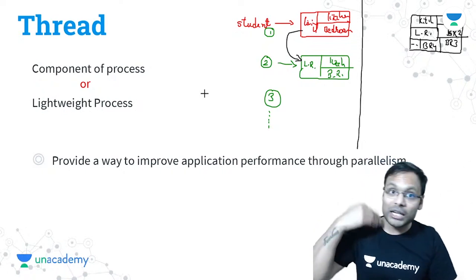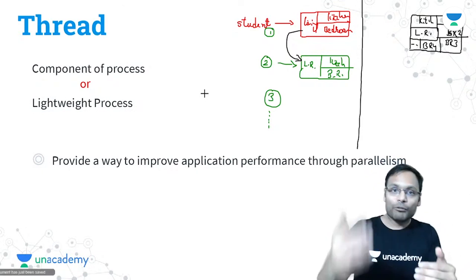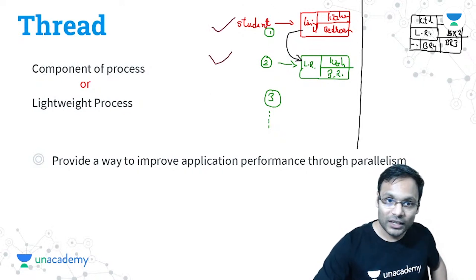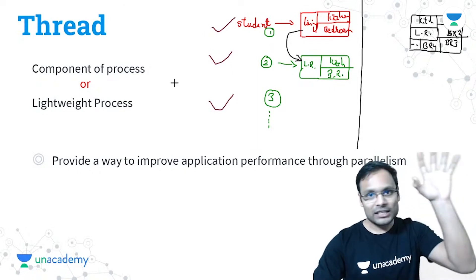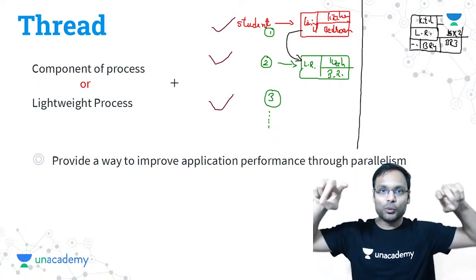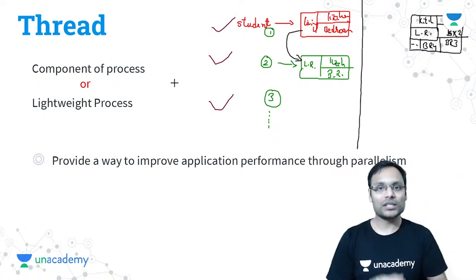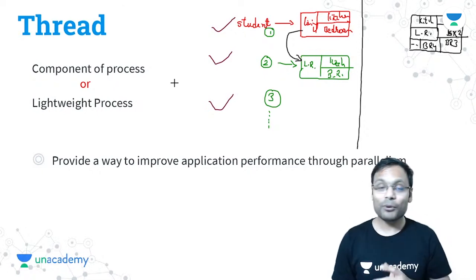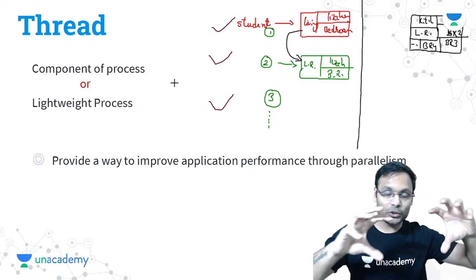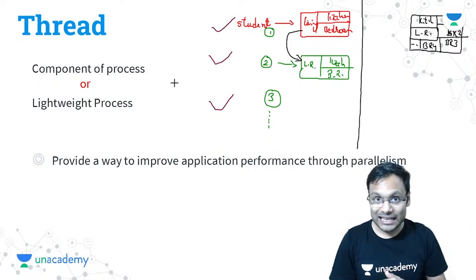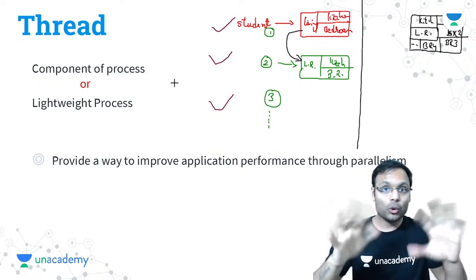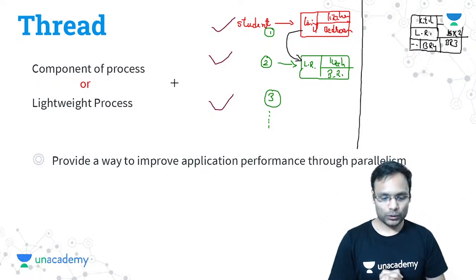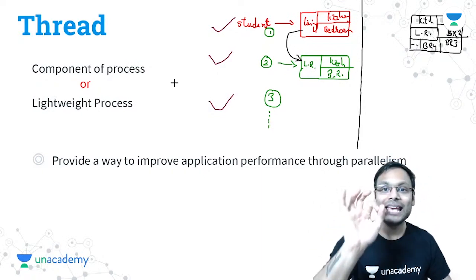But there are multiple requests coming, so the listener process would have to be replicated for as many requests as there are. The problem is that replicating entire processes is a very tedious task — the same code, same operation, only a few things are different — but you are replicating the entire process. This leads to a lot of memory usage, heavy processes, no sharing, and more resources required.